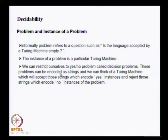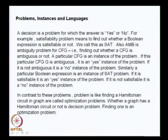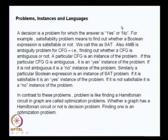Problems can be encoded as strings, and we can look at the Turing machine which will accept all yes-instances of the problem. The problem itself is encoded as a string, and all those strings which correspond to yes-instances of a problem form a language. We can think of a Turing machine accepting that language, and the Turing machine will reject the no-instances. If you can design an algorithm which comes out with an answer yes or no, the problem is decidable; if you cannot, the problem is undecidable.